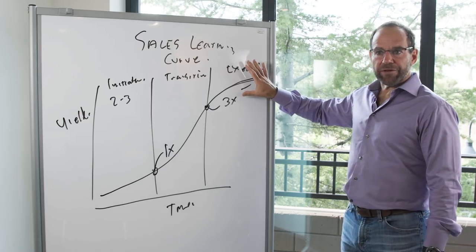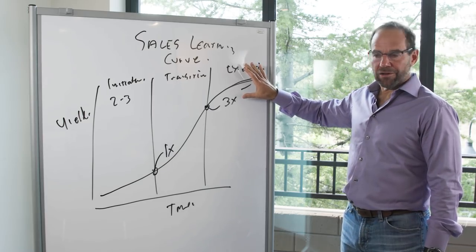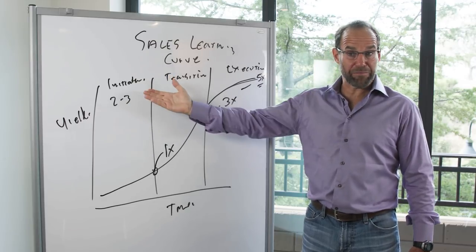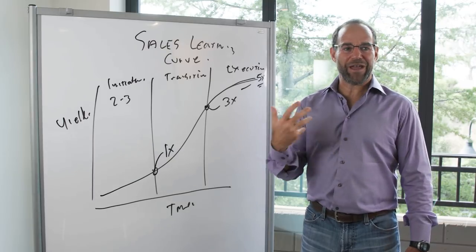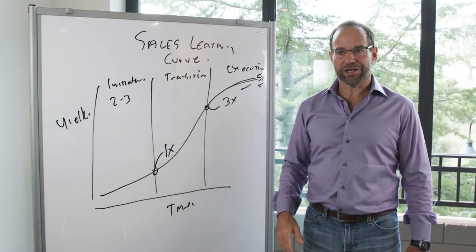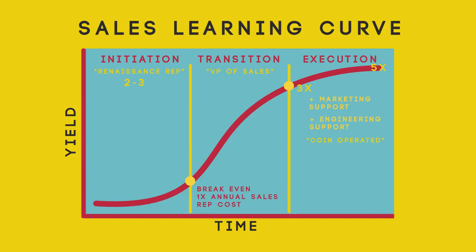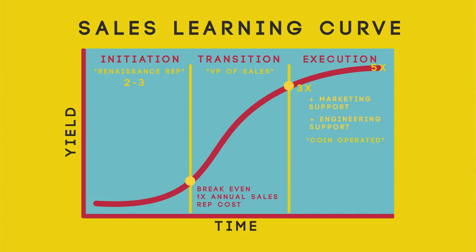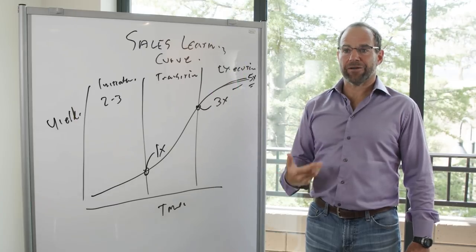Now, if the execution phase requires a different type of person, what do I do with the great people who started out as renaissance reps — the two or three core people who risked coming to the company and helped build the whole sales organization? By the time we get to execution, we're probably going to want to open up new geographies or have new products we're starting to build. These people are phenomenal at doing that because they know how to operate without any formal resources. We want to keep them through the whole cycle because they know a tremendous amount about our company.